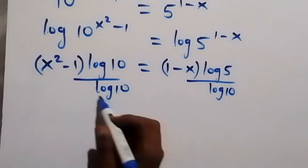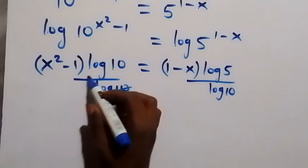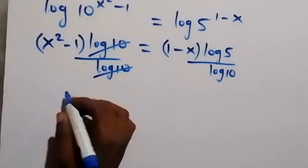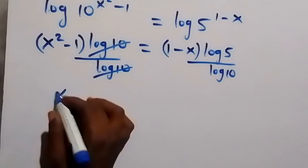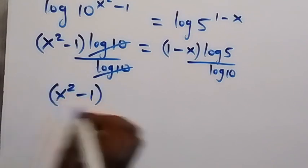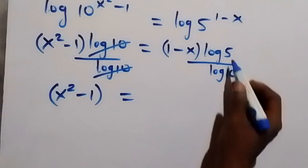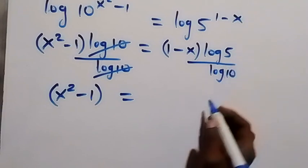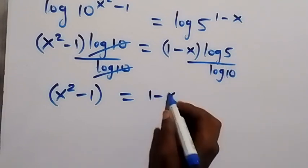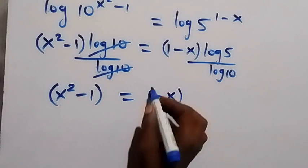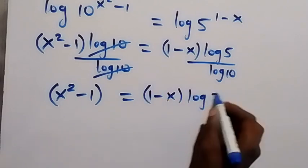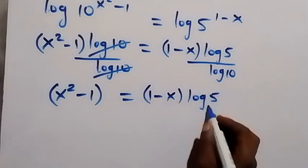The log 10 terms cancel each other, and we have x squared minus 1, equals 1 minus x, times log 5 base 10.